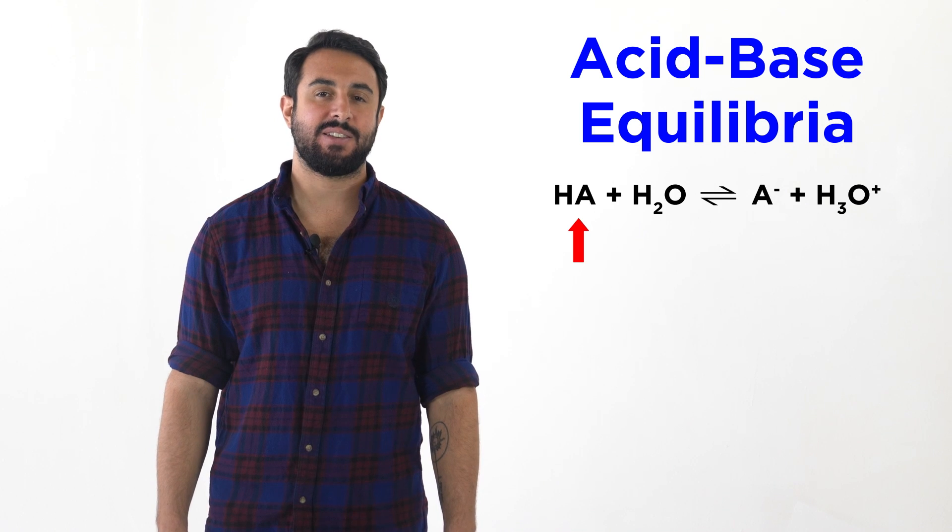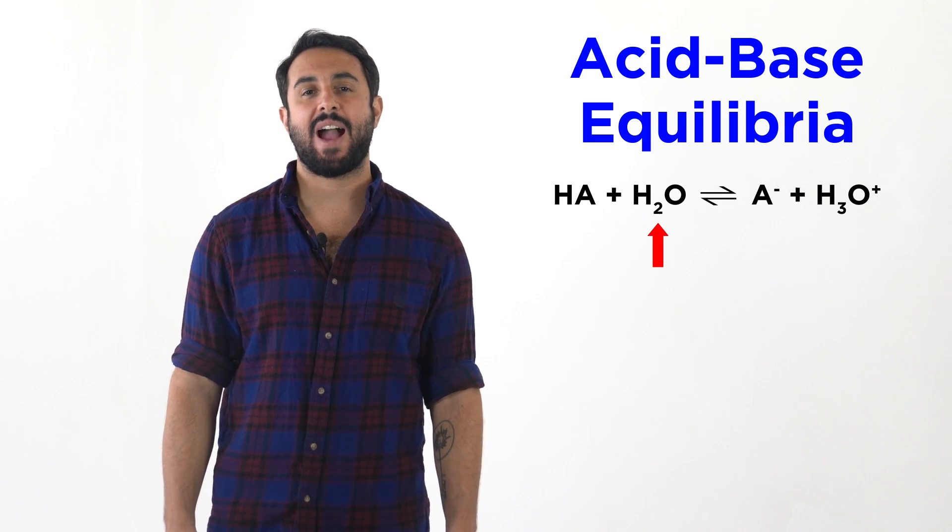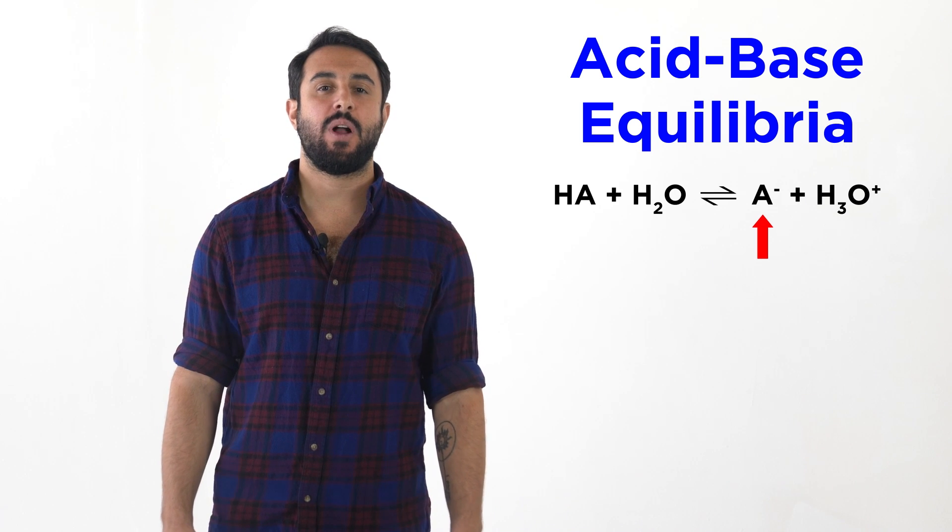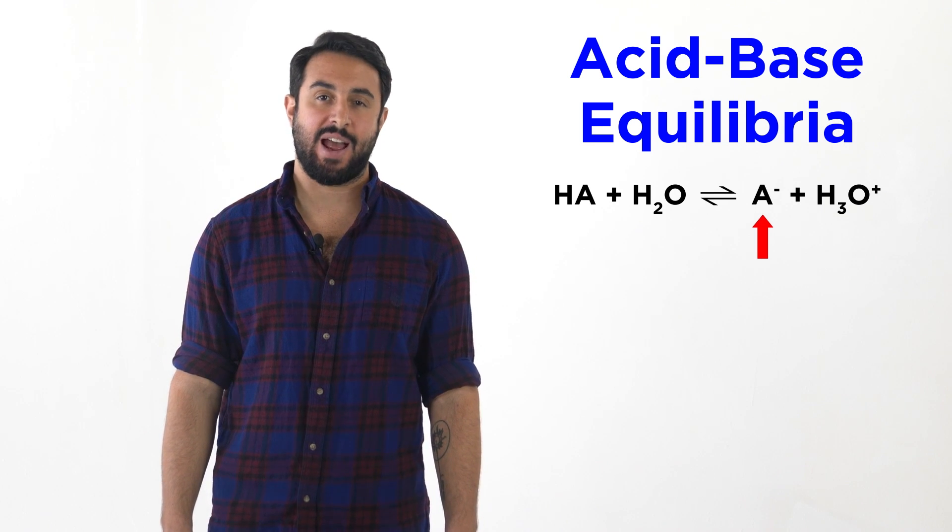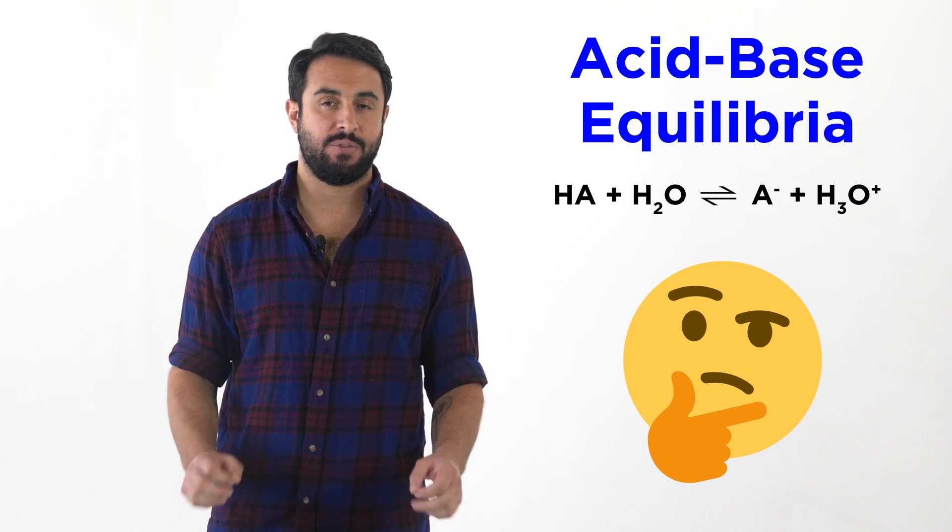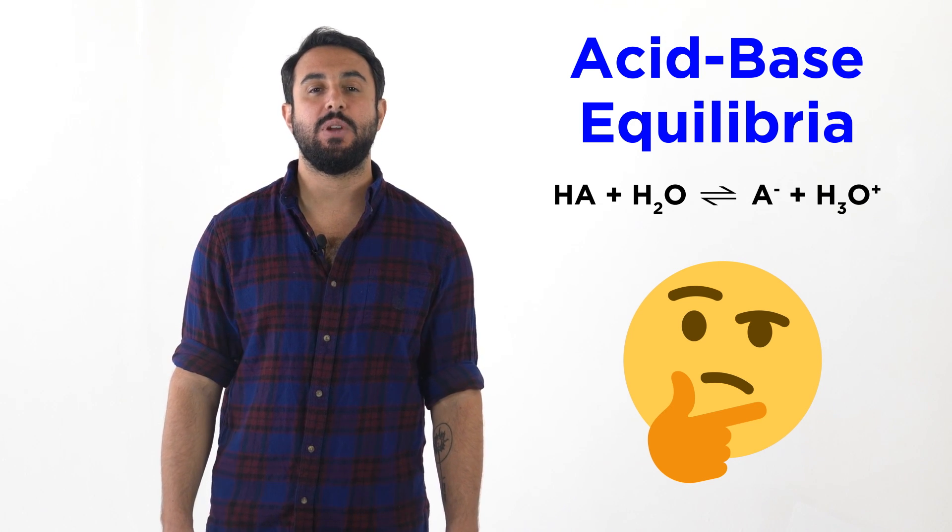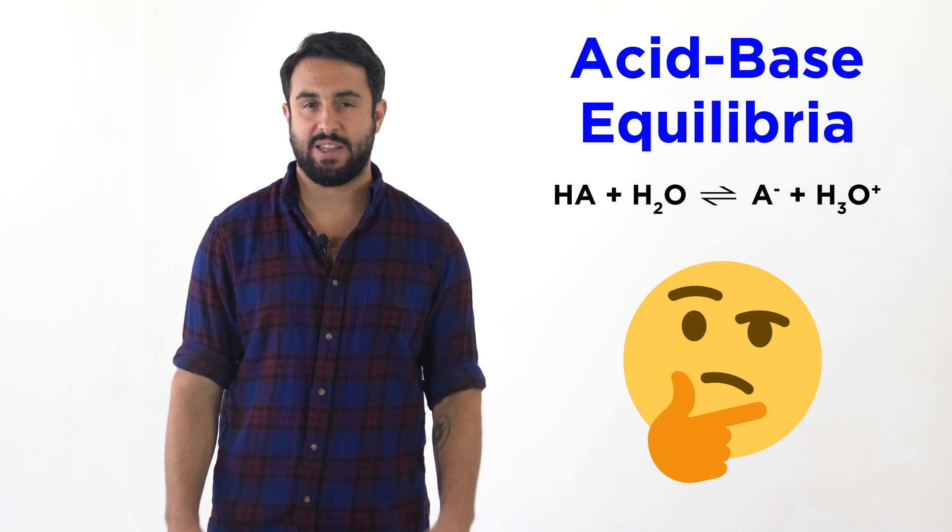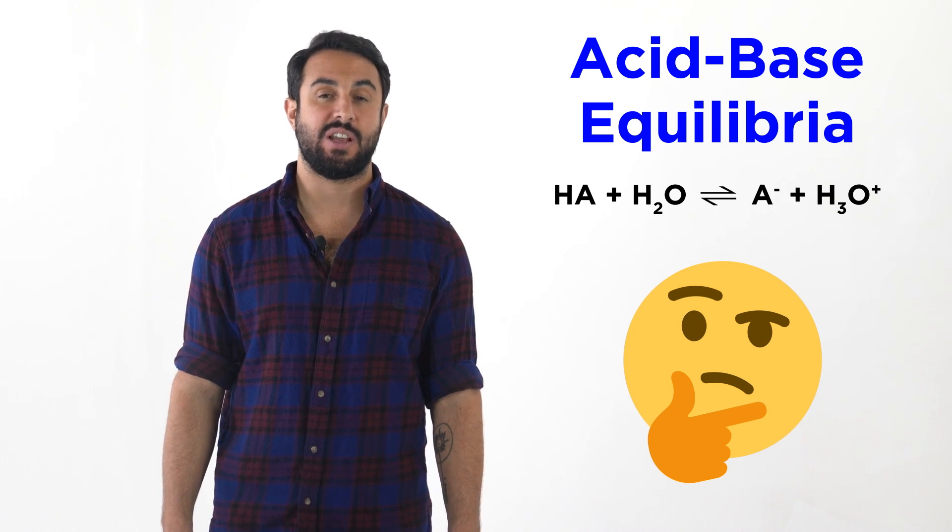We have a generalized acid reacting with water which will act as a base, which yields hydronium, the conjugate acid, as well as the conjugate base of the acid. But the degree to which an acid will ionize depends on the strength of the acid. How exactly do we determine whether an acid is strong or weak? This can get a little tricky, so let's go over some basic rules and examples.